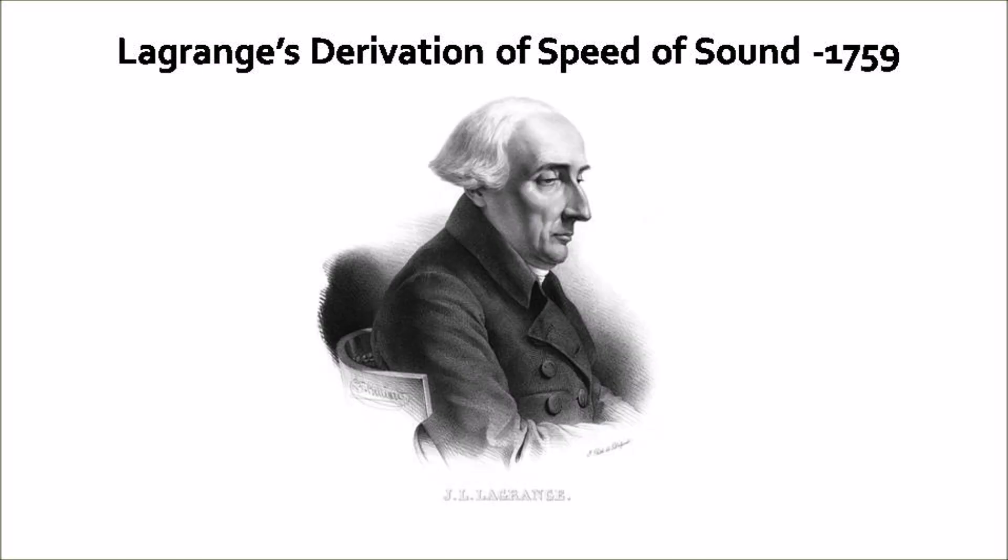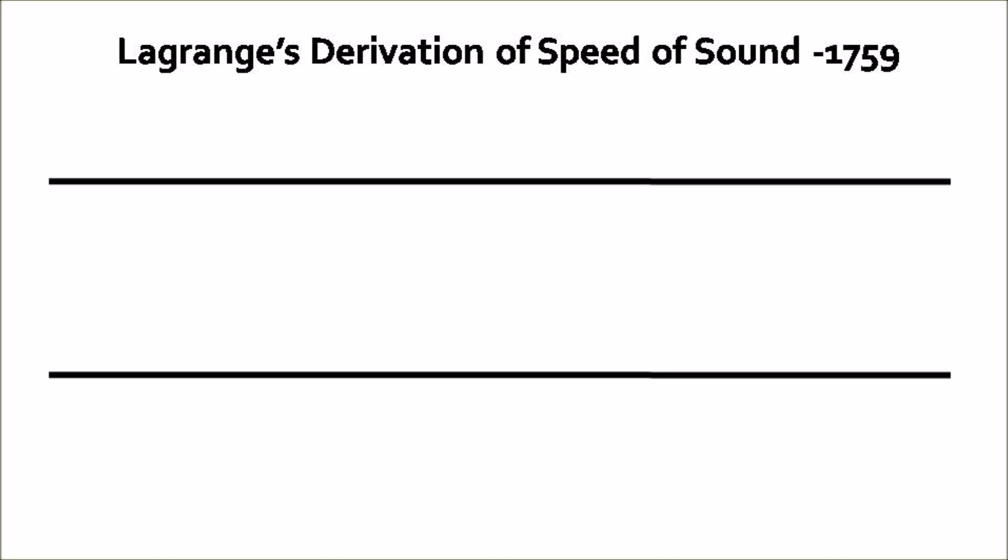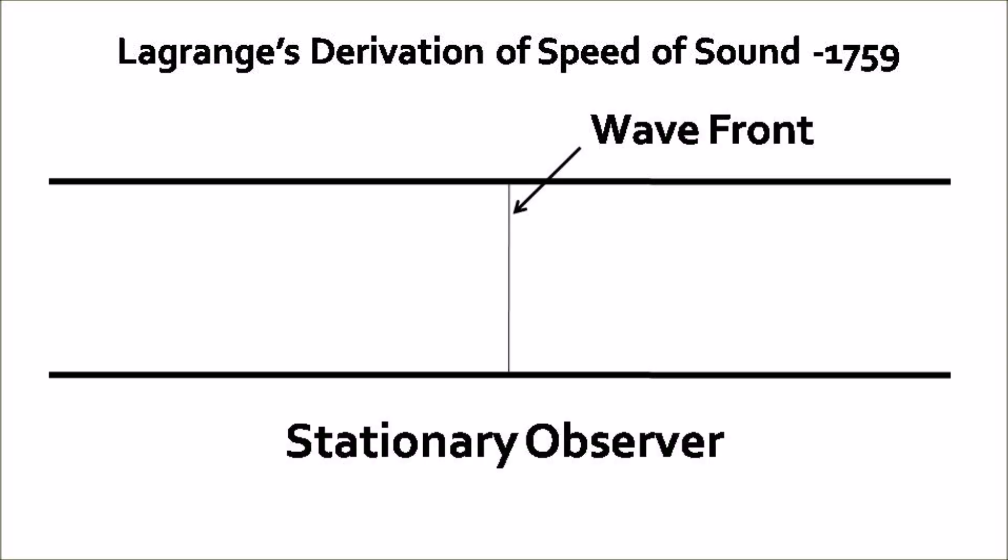In the same year, one of Euler's students, J.L. Lagrange, gave a derivation for the speed of sound. This is the same derivation which is used presently in textbooks and classrooms to derive the formula for speed of sound. In this derivation, a long tube is considered in which a pressure pulse or sound wave progresses. A stationary observer sees the wave progressing at a speed c. The pressure and density in the undisturbed gas are p and rho respectively.